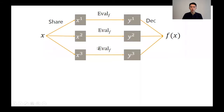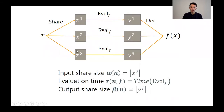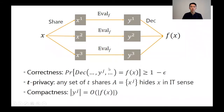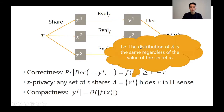Several important metrics of the scheme are the input share size alpha, the local evaluation time tau, and the output share size beta. For the scheme to be useful, it has to be correct — the client will recover the correct value with high probability. By t-privacy, we mean that any set of t shares among the k shares should information theoretically hide the original secret. More formally, the distribution of the set is the same regardless of the actual value of the secret.